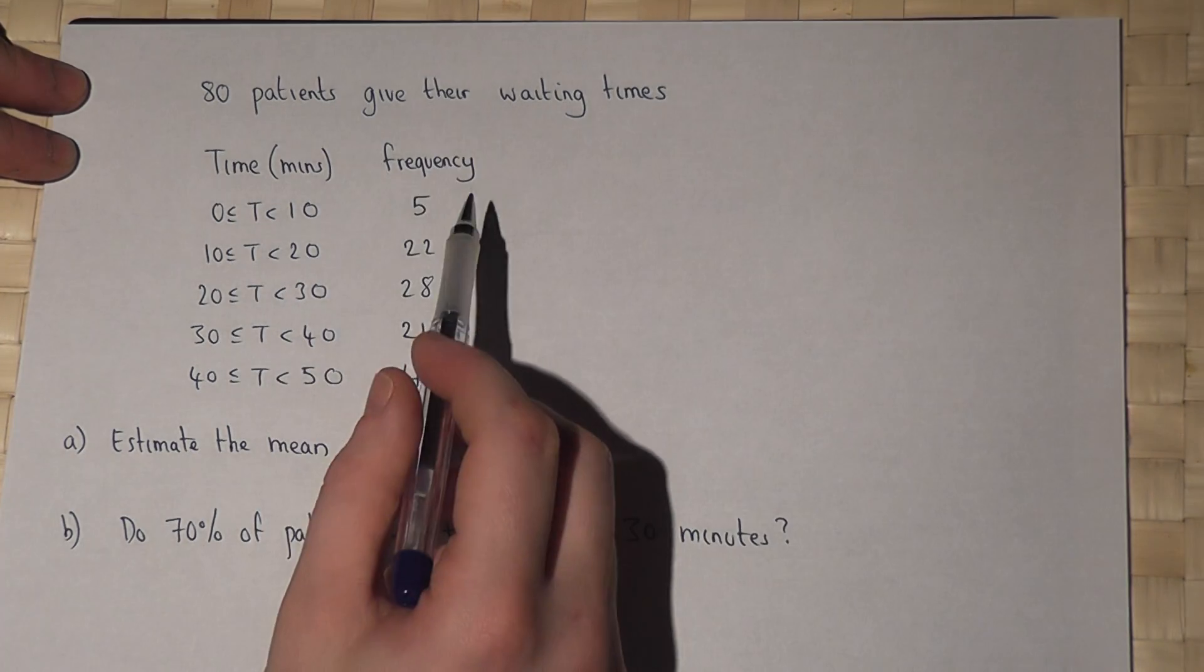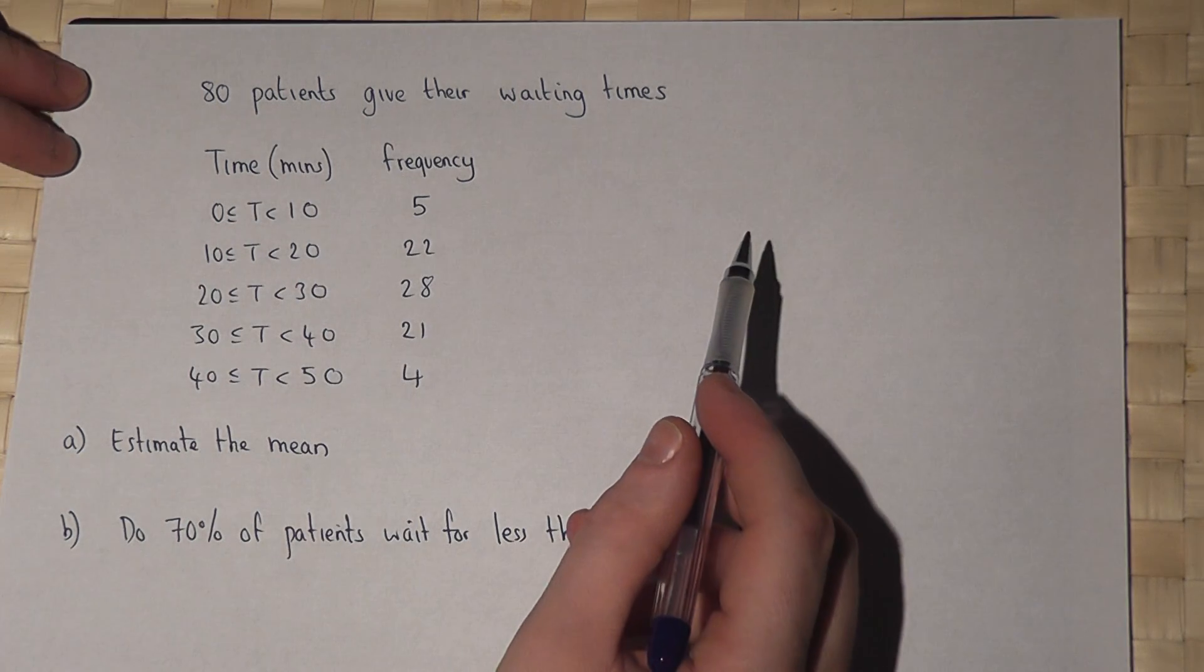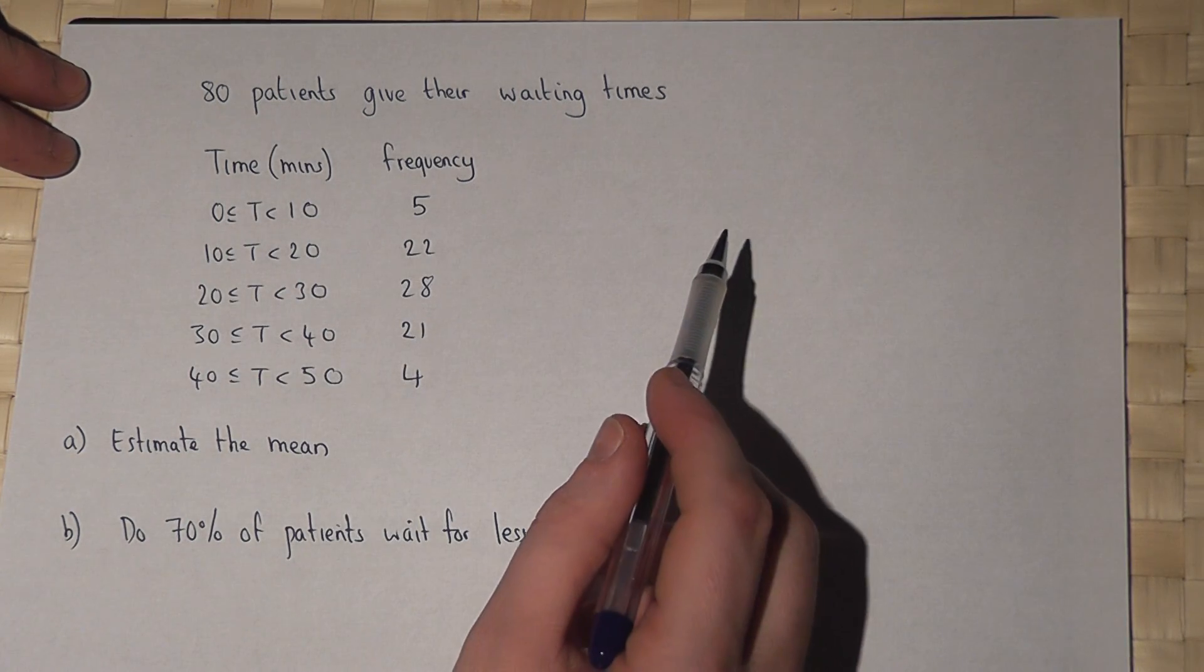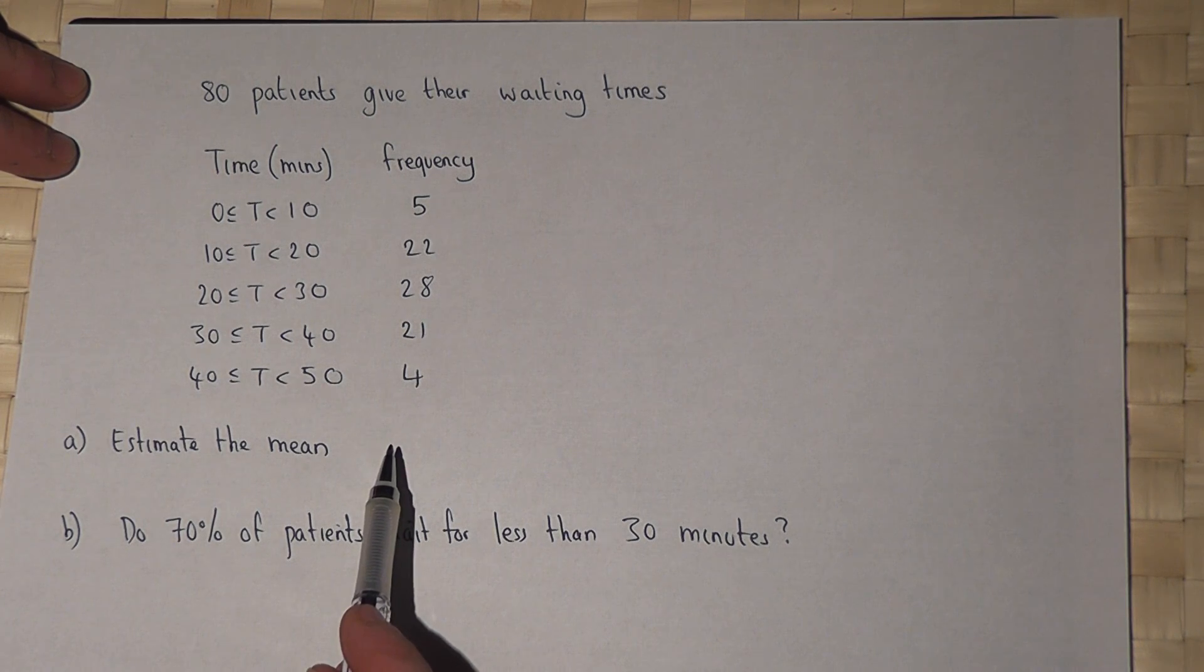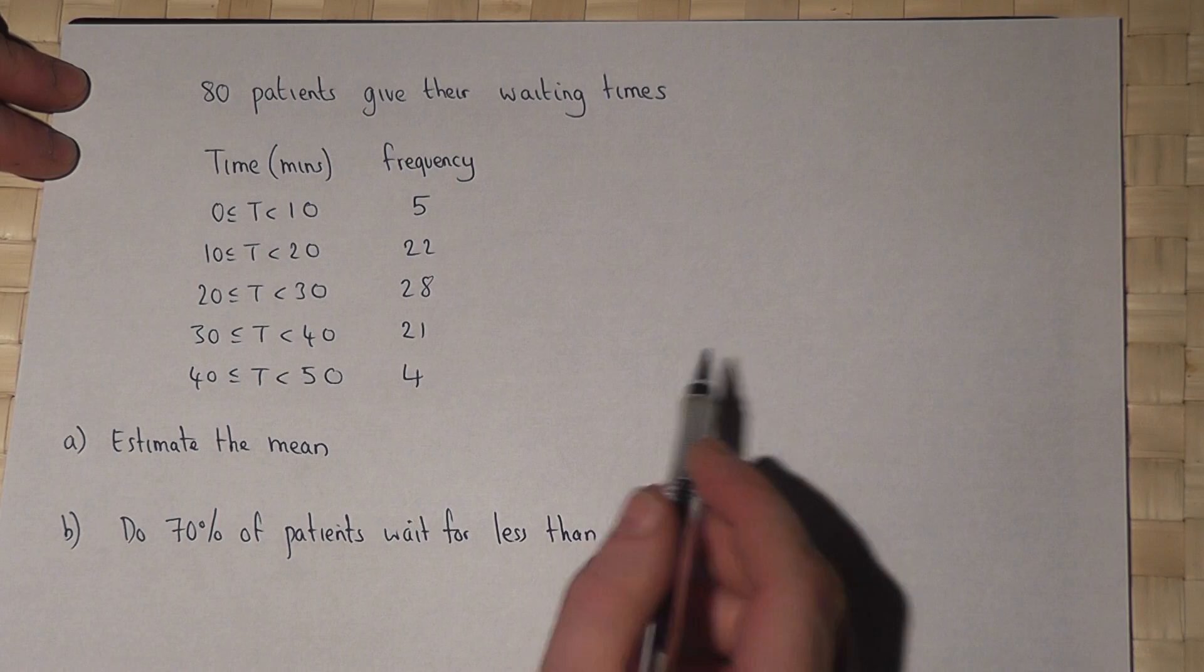In this question we're told the waiting times of 80 patients at a doctor's surgery and in part A we're asked to estimate the mean. Now to do this we add two extra columns to the table.